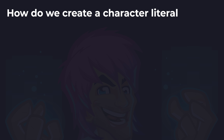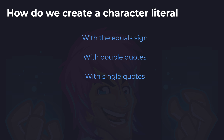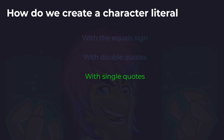How do we create a character literal? Is it with the equal sign, with double quotes, or with single quotes? And the answer is using single quotes. A character literal is a value itself — such as 1 is an integer literal, 1.5 is a double literal. To create a character, for example A, we place the letter A inside single quotes, then use the equals sign to assign that to a variable. Double quotes is used for creating a string literal, not a character.